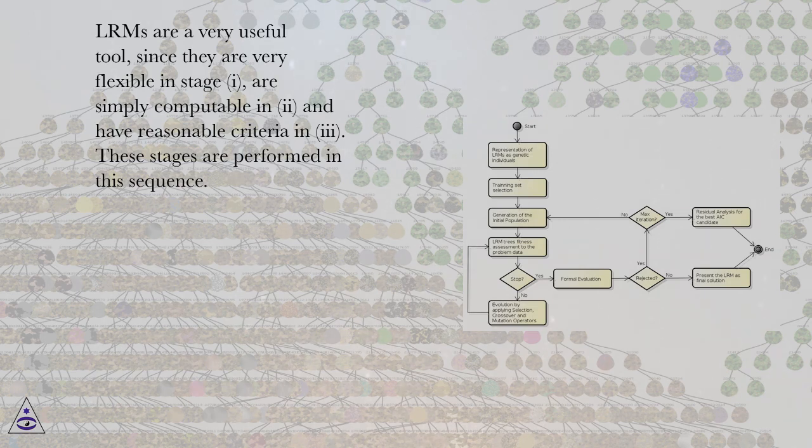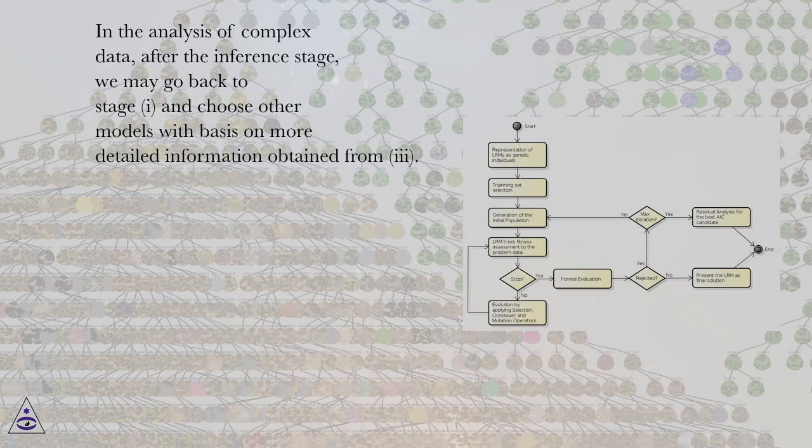In the analysis of complex data, after the inference stage, we may go back to stage 1, and choose other models with basis on more detailed information obtained from 3.